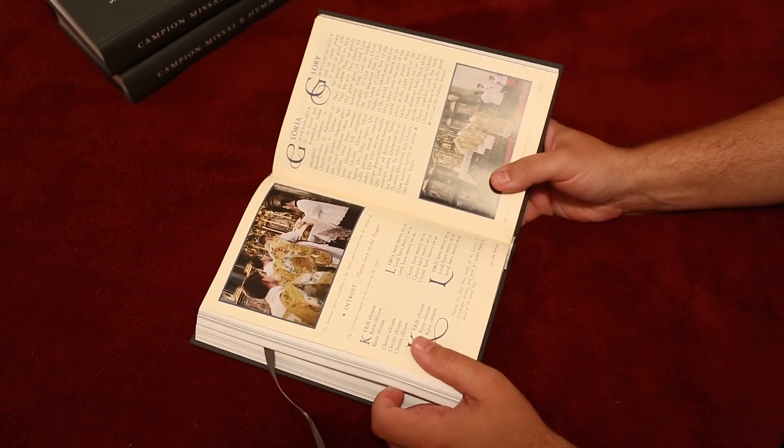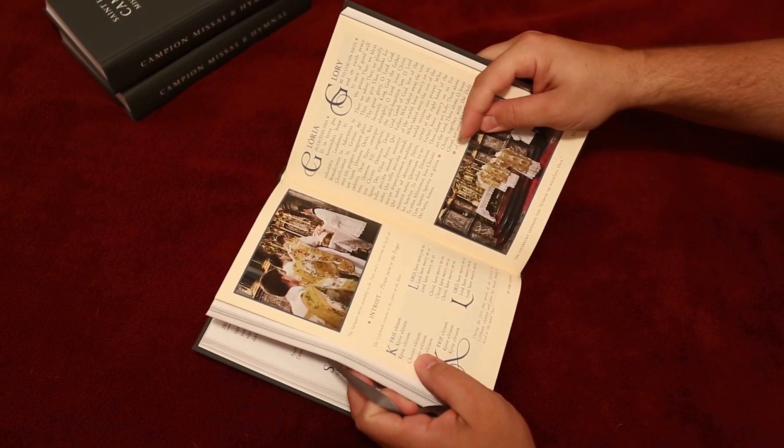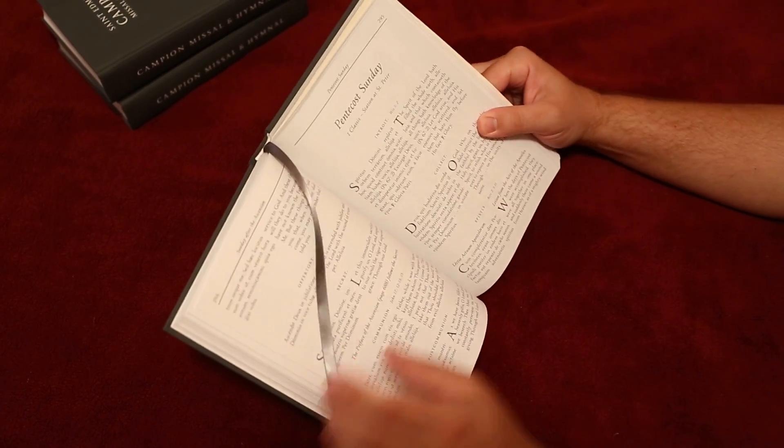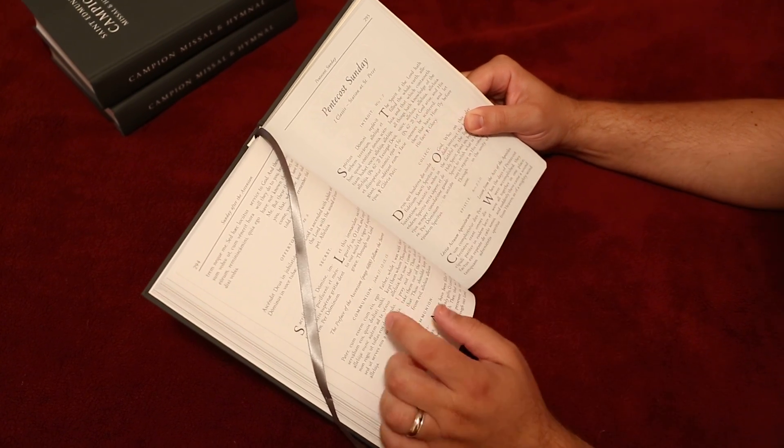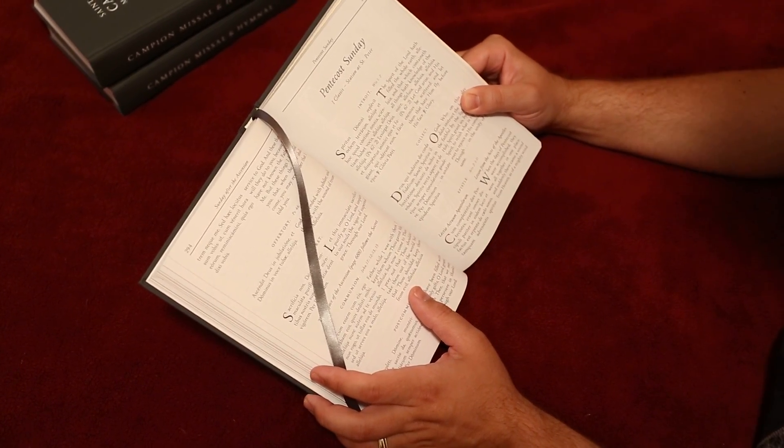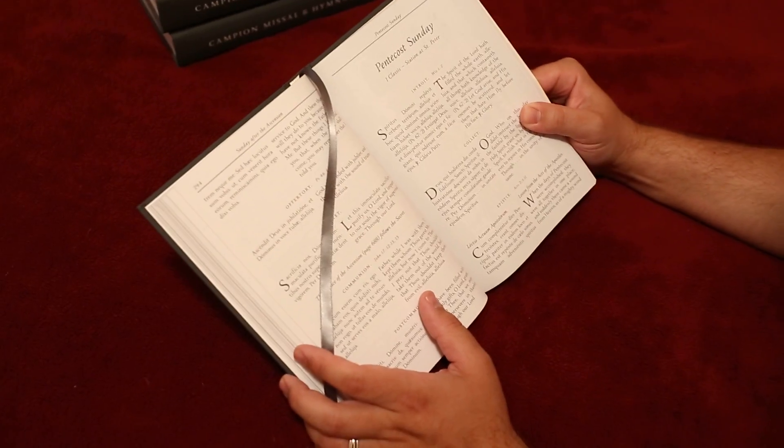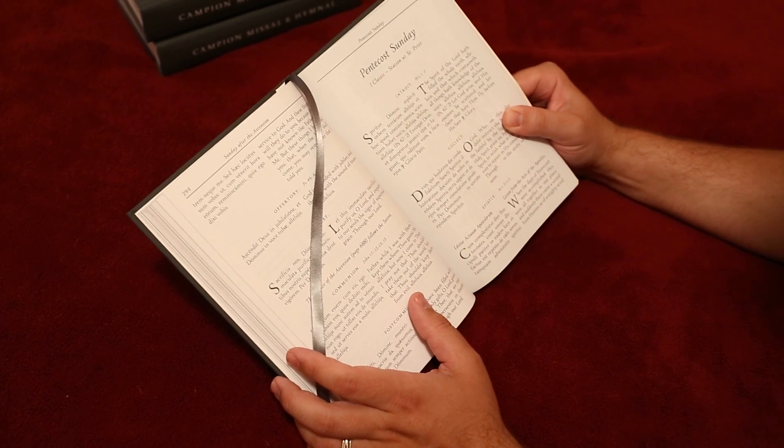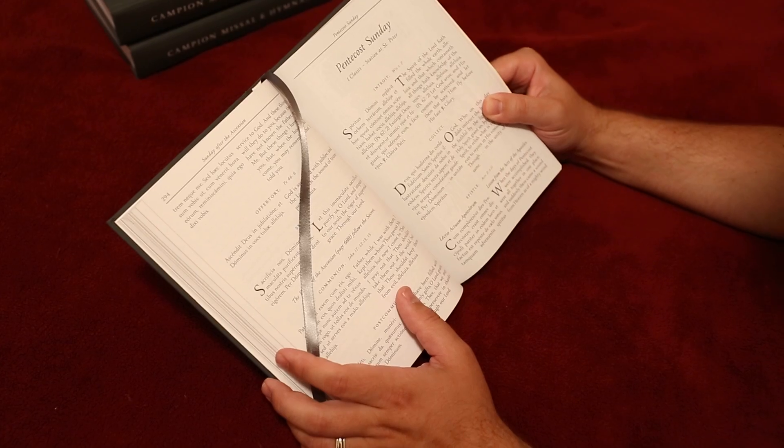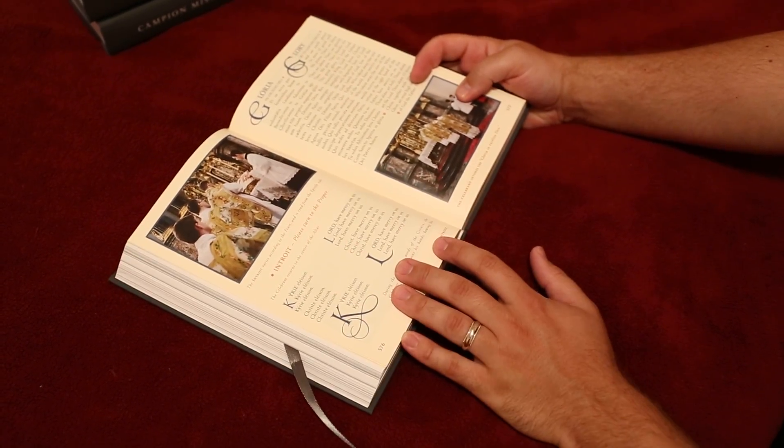Now for a short prayer like the introit, which is usually only one or two sentences, I actually keep my thumb on the ordinary of the Mass and just read the introit since it's only a couple sentences. The Spirit of the Lord hath filled the whole earth, alleluia! Alleluia! Let God arise, and his enemies be scattered, and let them that hate him fly before his face. Then I just turn back to where I was, and I go on.